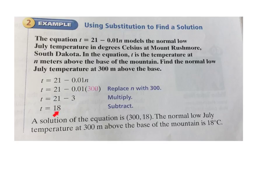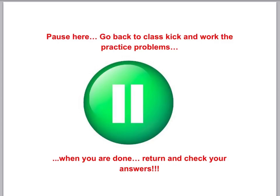So the solution here of the equation is 318. The normal low temperature at 300 degrees in July is about 18 degrees Celsius. Go ahead and pause, head into class kick. We're going to work a similar problem.